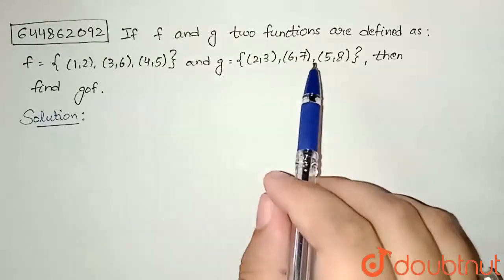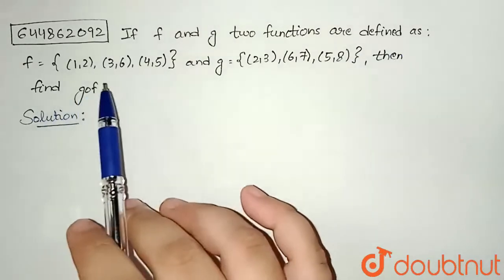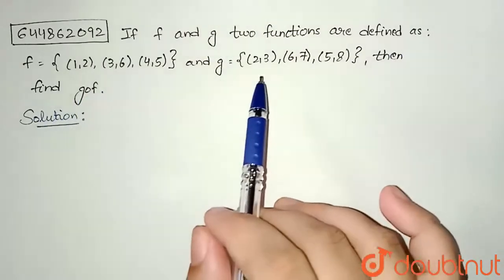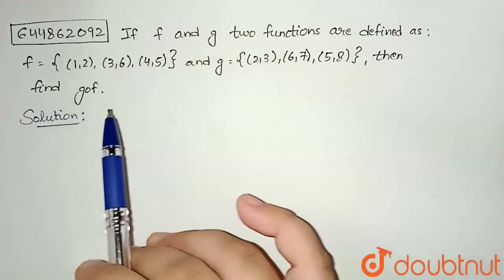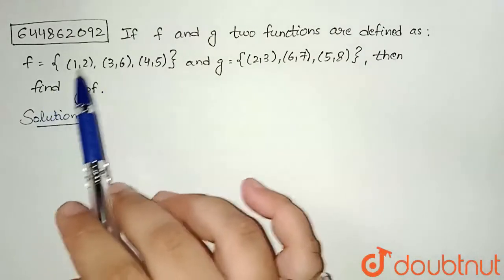f and g two functions are defined as f = {(1,2), (3,6), (4,5)} and g = {(2,3), (6,7), (5,8)}, then find gof. So we are defined here two functions f and g, and we need to find gof, that is composition of the function.